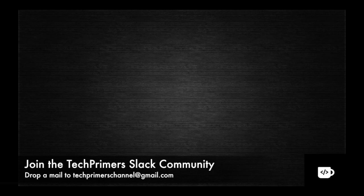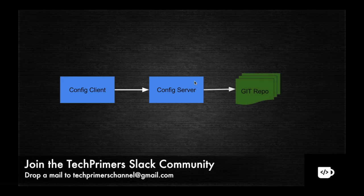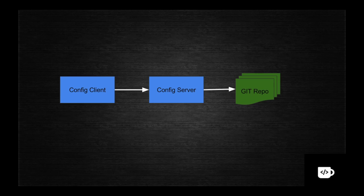In order to do that we need to understand how the config server works. Spring has something called Spring Cloud Config Server. To use that framework we have to follow this architecture design pattern. We need to design a configuration client — basically a Spring Boot application — that will communicate with the config server, which in turn redirects to the GitHub repository to access properties.